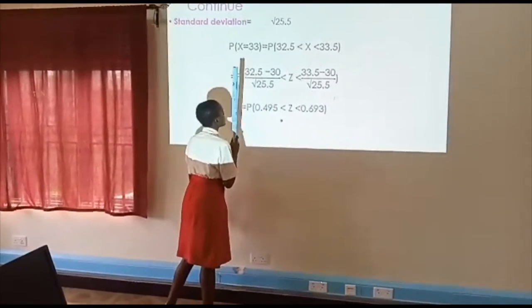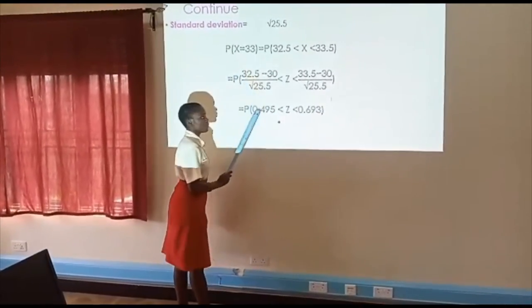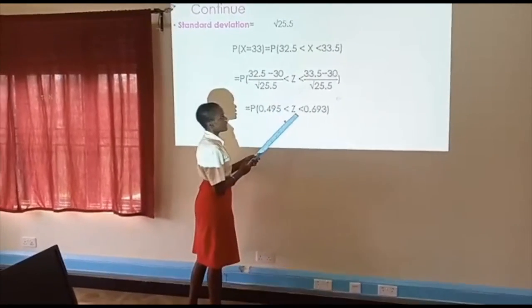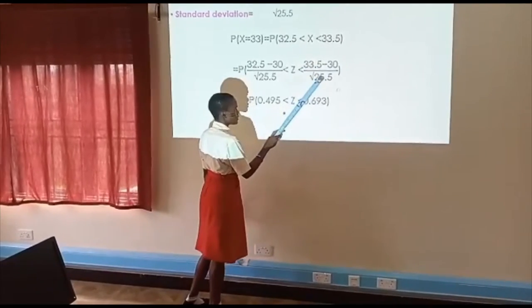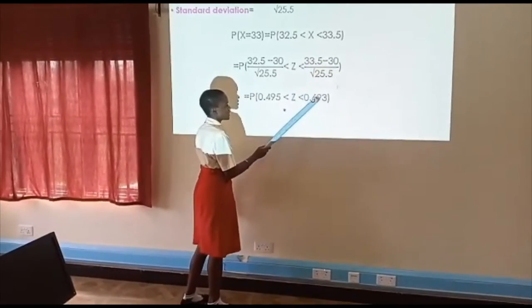So it's 32.5 minus 30 divided by the root of 25.5, less than Z, less than 33.5 minus 30 divided by the root of 25.5. When we subtract and divide, we get 0.495 less than Z less than 0.693. So now we have our interval.